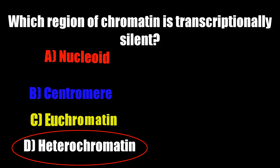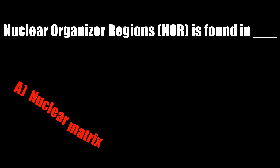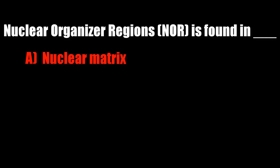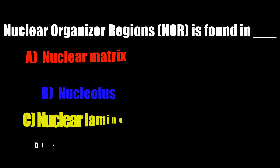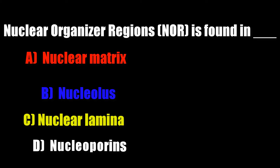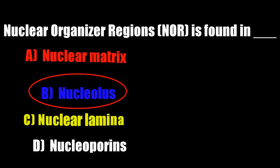Correct answer is heterochromatin. Nuclear organizer region is found in: nuclear matrix, nucleolus, nuclear lamina, nucleoporins. Correct answer is nucleolus.